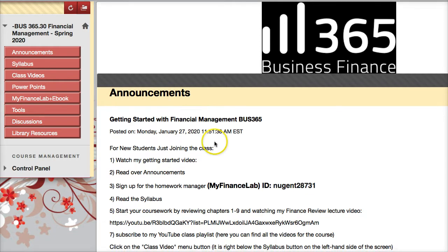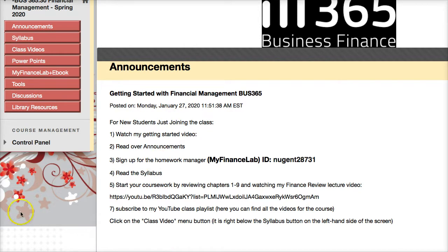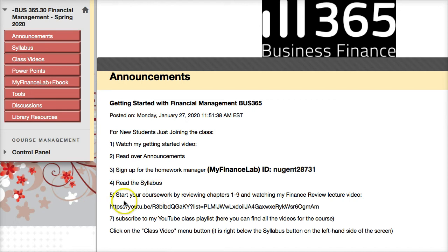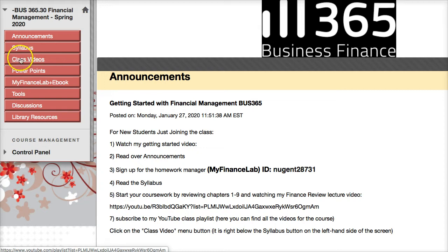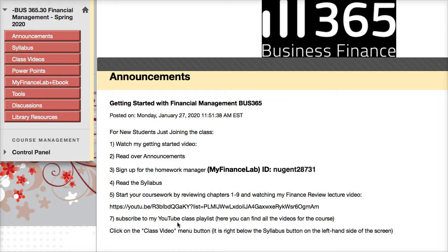The first thing you should generally do is read over announcements. The first announcement is getting started with the course — watch my getting started video, which you're doing now, so you're on track. We're going to read over the announcements, look at the homework manager using the course ID tied to our class, read over the syllabus, and then start your coursework. The first thing we're going to do is review chapters one through nine, and you'll watch my finance review lecture videos. The playlist is on YouTube under class videos. Subscribe to my YouTube channel so you get notifications if I post new videos.